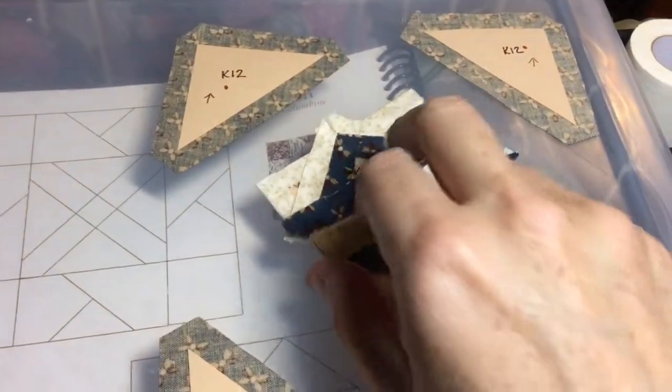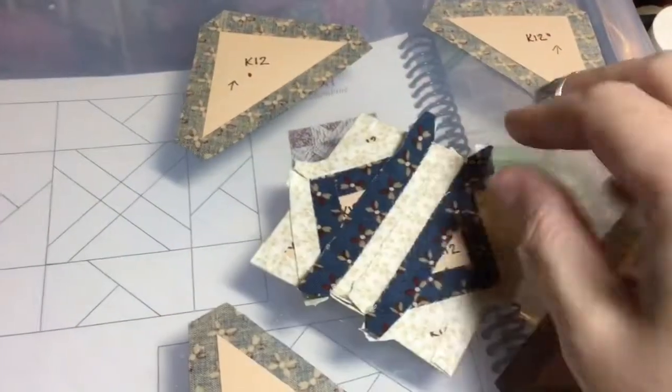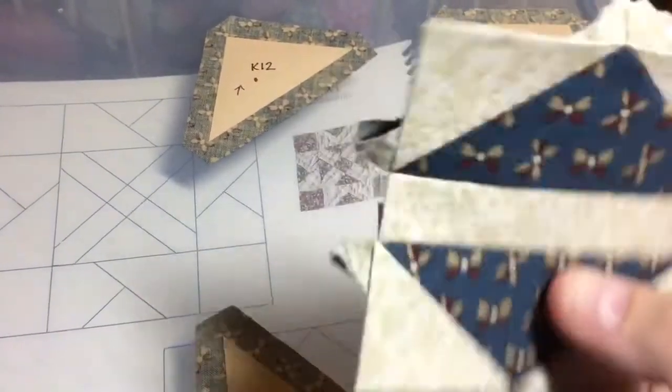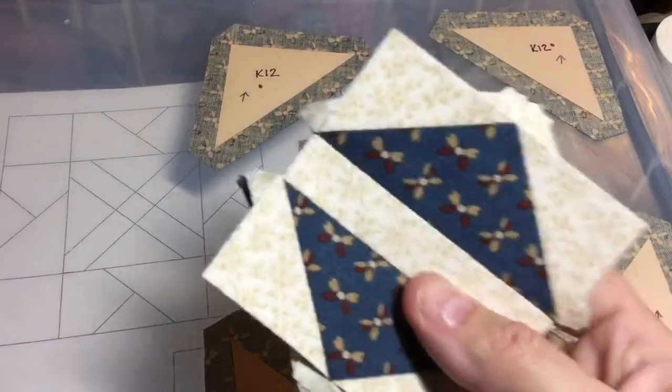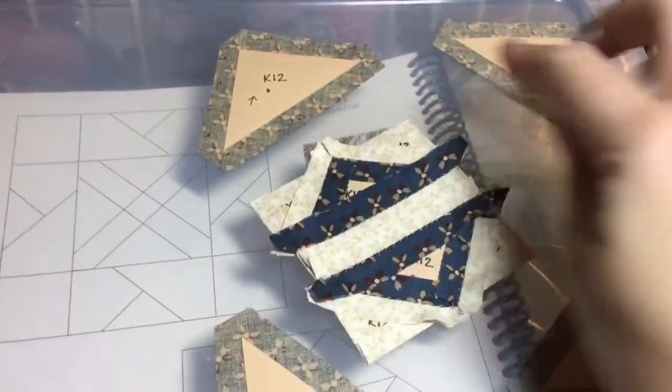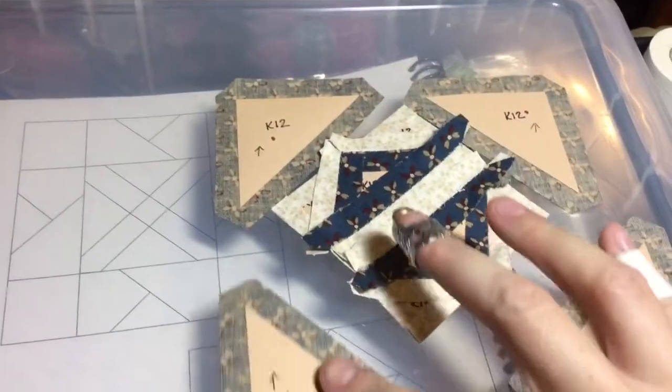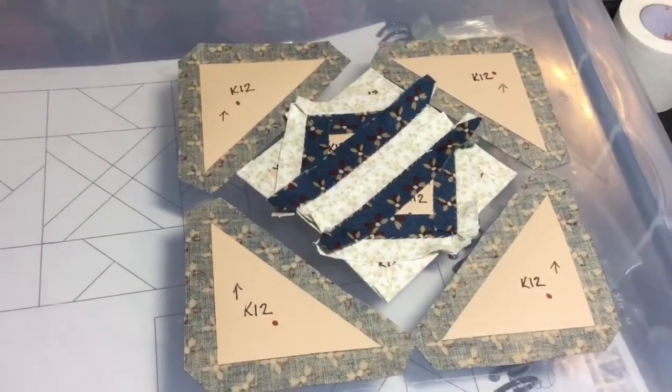So now I have my center square all assembled, and now it's a matter of putting on the triangles on the side. So I will stick this on point and attach these exactly where they're supposed to be, so that my directional fabric doesn't get affected.